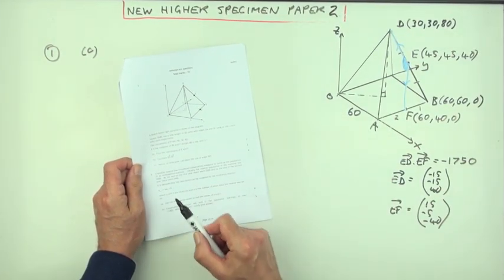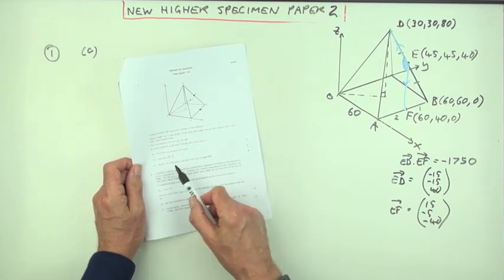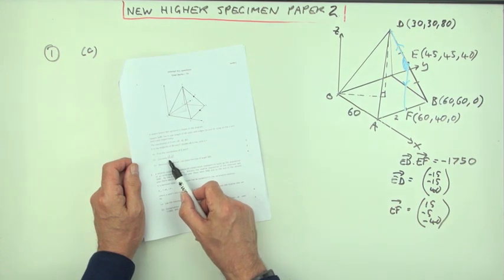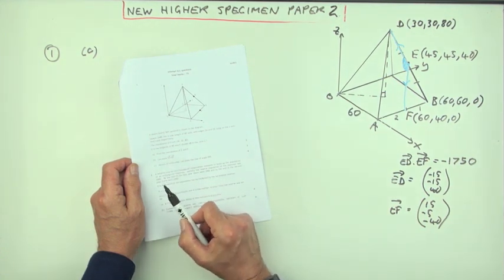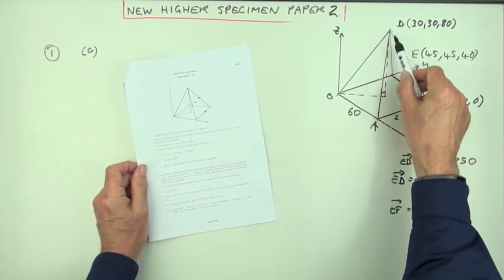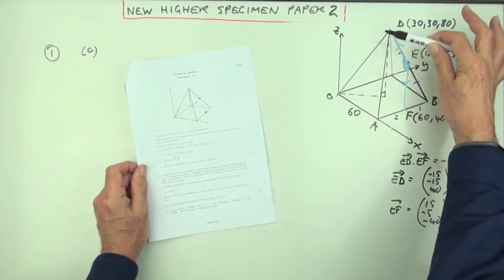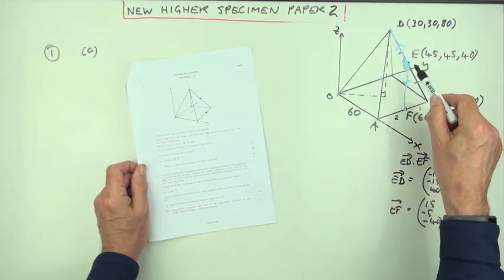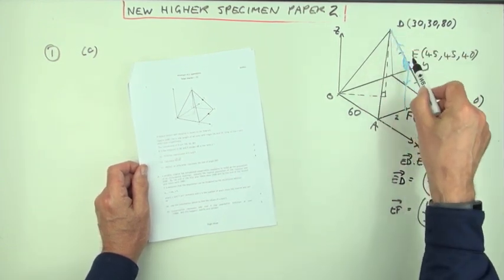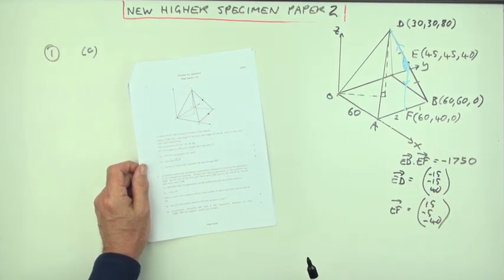That's quite a lot just for two marks. A lot of arithmetic. Now, part C. Hence, or otherwise, calculate the size of angle DEF. Well, they've already forced you along the hence route by asking you to work out this scalar product, ED dot EF. The information's over here. So angle DEF is this angle on this triangular face that's facing us.